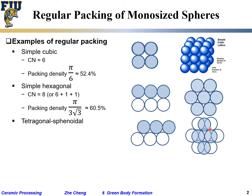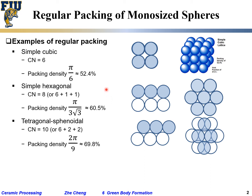Within the bottom plane there are still 6 neighbors. Above it, only 2 atoms are touching — the one on the left and the one on the right — because in this shifted arrangement, the third atom above cannot reach the bottom one. So the coordination number is 10: 6 from in-plane, 2 from above, and 2 from below. The packing density is 2π/9, which is somewhat higher than simple hexagonal and higher than simple cubic.